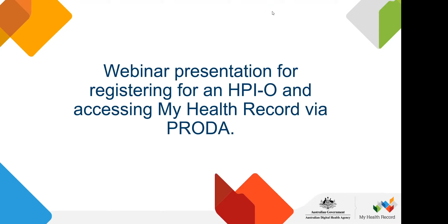Tonight I'm going to discuss how to register for a healthcare provider identifier organisation, also known as an HPIO, and how to link this to your individual healthcare provider identifier, called your HPII, so you can then access My Health Record for your patients. The Digital Health Agency says this whole registration process should take eight minutes, so you might be able to get registered tonight as you follow along.